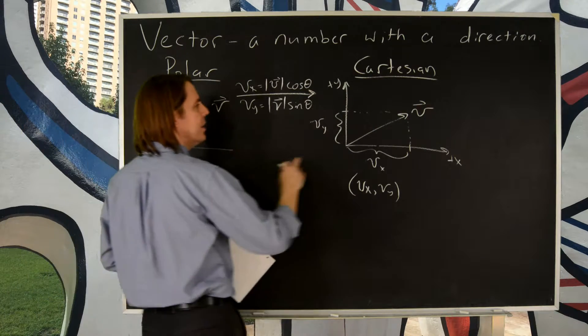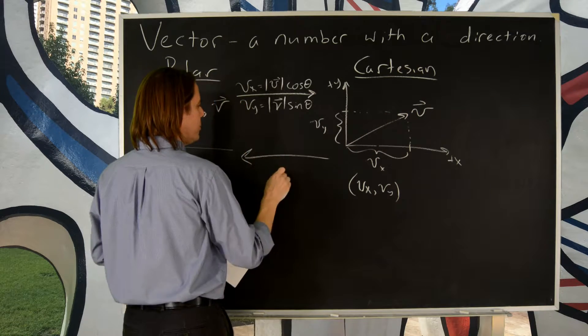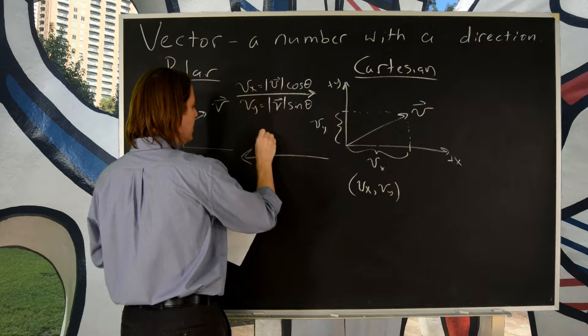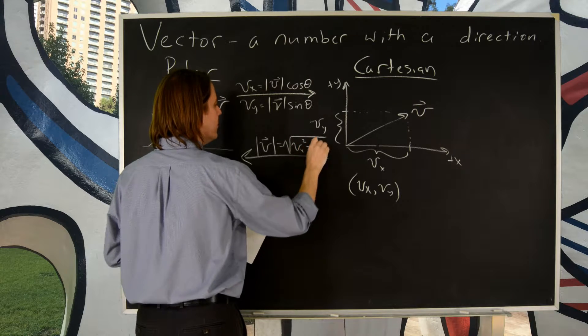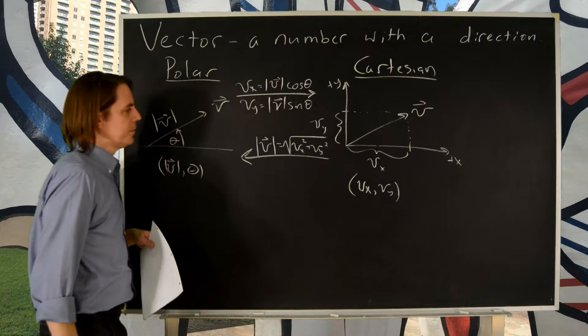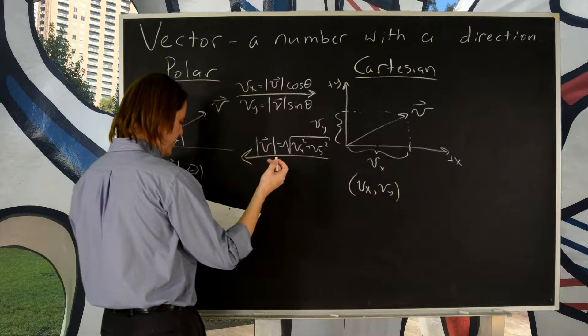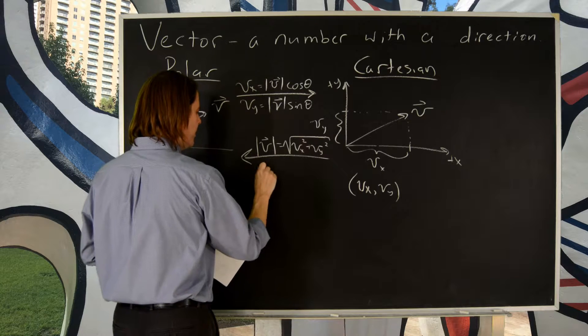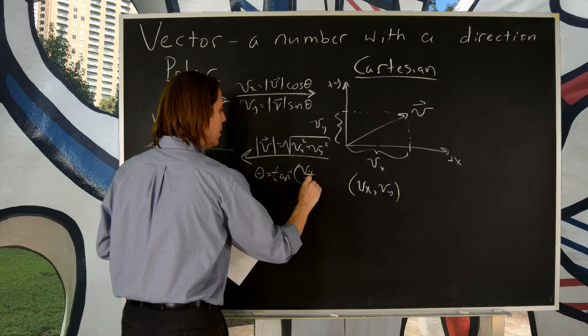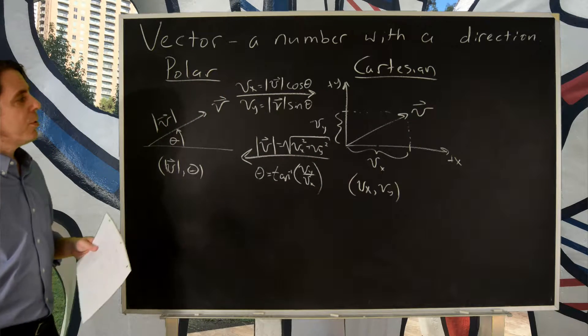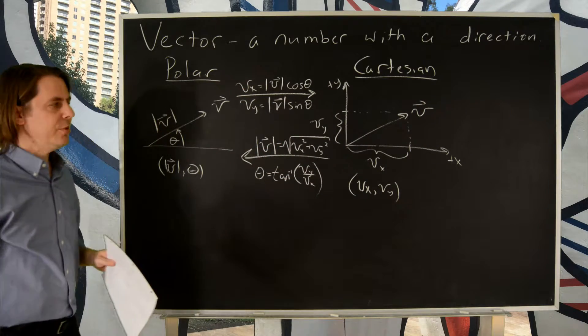If you want to come this way, so say you figured out your two components and you want to know the magnitude. This way, then, you would say that the magnitude, the length of the vector from the Pythagorean theorem, is the square root of Vx squared plus Vy squared. And if you want the angle from the two components, you have to use the tangent function so you get that theta is the inverse tangent of Vy over Vx. So a big part of what you'll do is right here. You'll have problems going back and forth, back and forth with vectors.